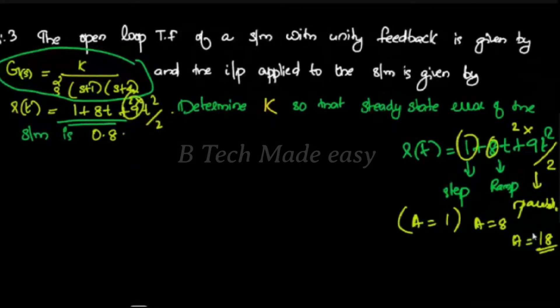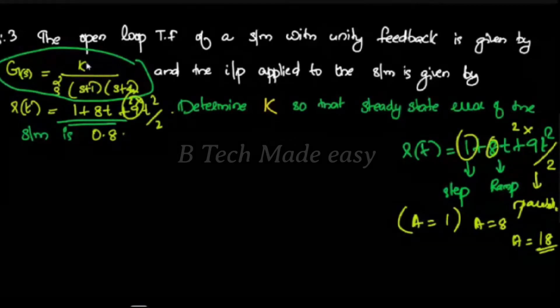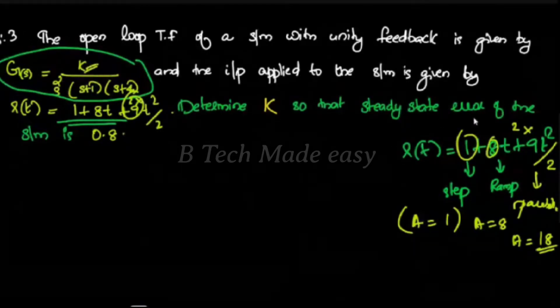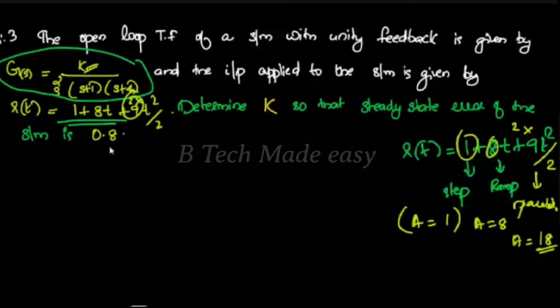In this case, there are three inputs to determine the value of K, so that the steady-state error of the system is 0.8. The system steady-state error must equal 0.8 total.